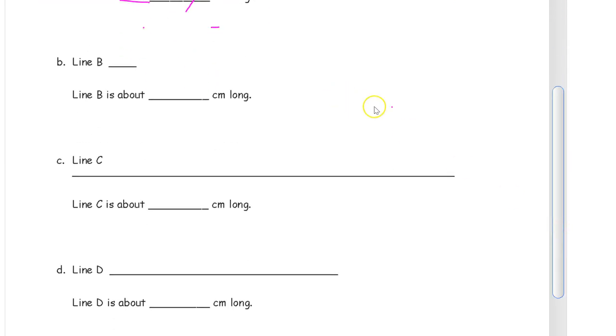Do the same thing with line B. Use your pinky. That looks like about one pinky long. You know, the width of my pinky. About one of them. One.